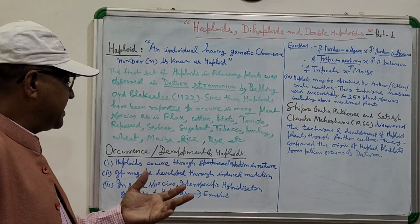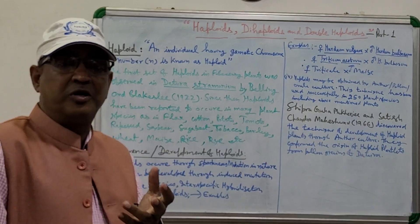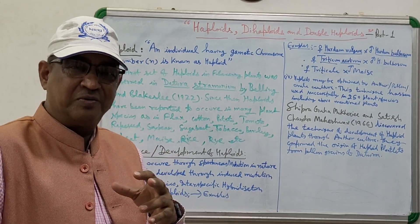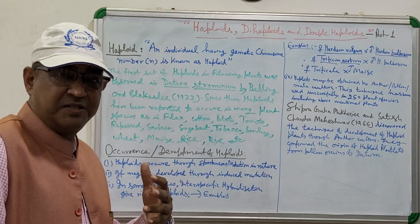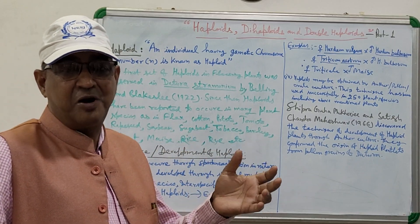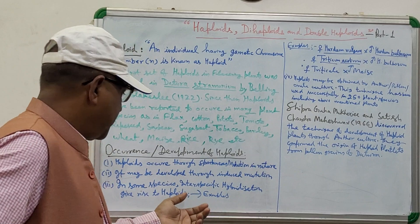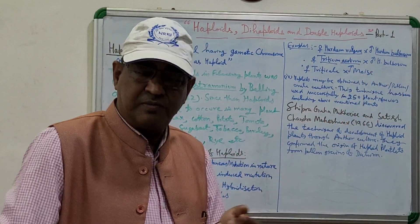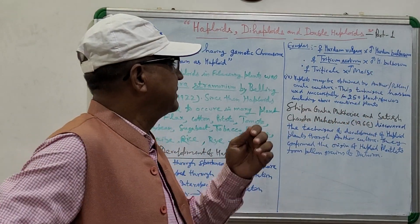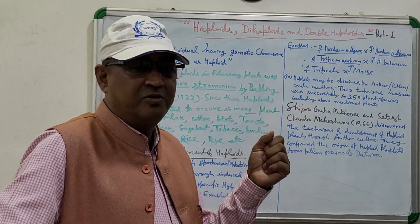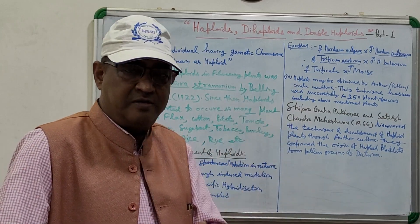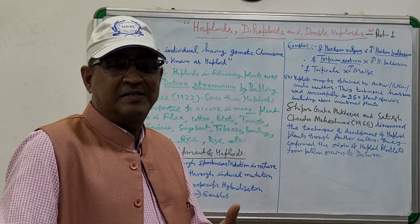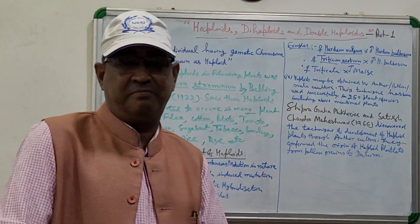In some species, interspecific hybridization also gives rise to haploids. It has been observed that certain interspecific crosses yield haploid plants. For example, Hordeum vulgare crossed with Hordeum bulbosum has given haploid plants. Also, Triticale crossed with maize has given haploid plants. These have been artificially made.